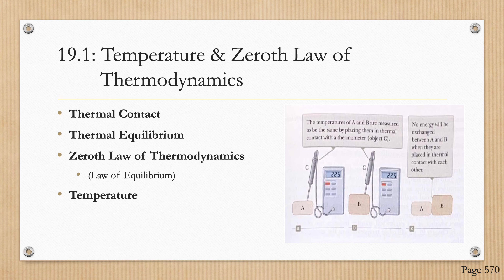We can summarize these results in a statement known as the zeroth law of thermodynamics, which states that if objects A and B are separately in thermal equilibrium with a third object C, then A and B are in thermal equilibrium with each other. This helps transition us to the definition of temperature, where temperature is a property that determines whether an object is in thermal equilibrium with other objects.